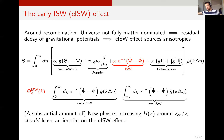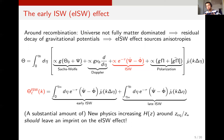This term comes from the time variation of the gravitational potentials phi and psi, and it gets two contributions at different epochs: at late times when dark energy dominates and potentials decay, and at early times when the universe was not fully matter-dominated and potentials also decay. Remember that in a fully matter-dominated universe potentials are constant in time.